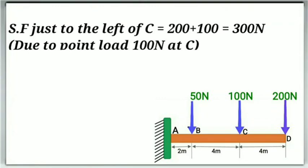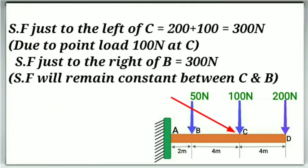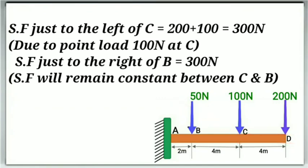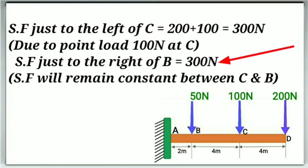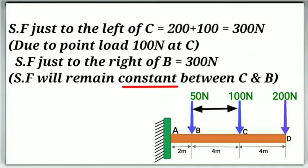Shear force just to the left of point C will be equal to the summation of all the forces in the right portion of this point, which will be equal to 200N plus 100N equal to 300N. And shear force just to the right of point B will also be equal to 300N, since shear force will remain constant between point C and B because there is no load in between C and B.